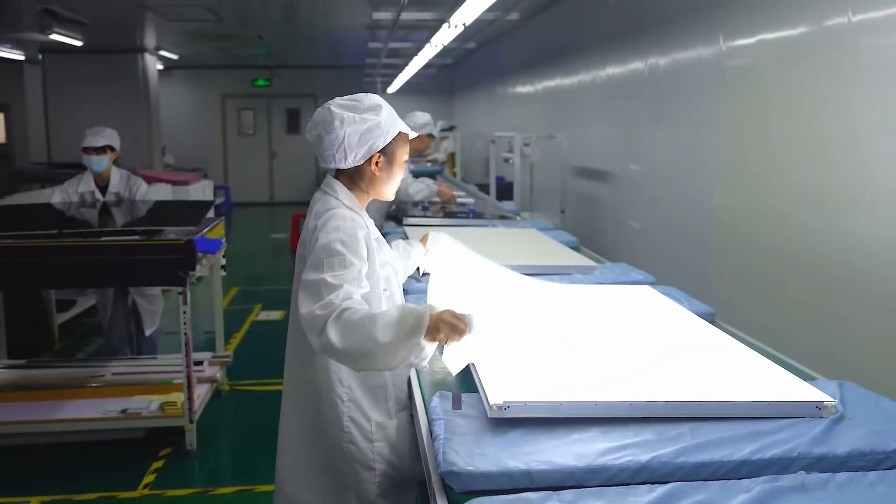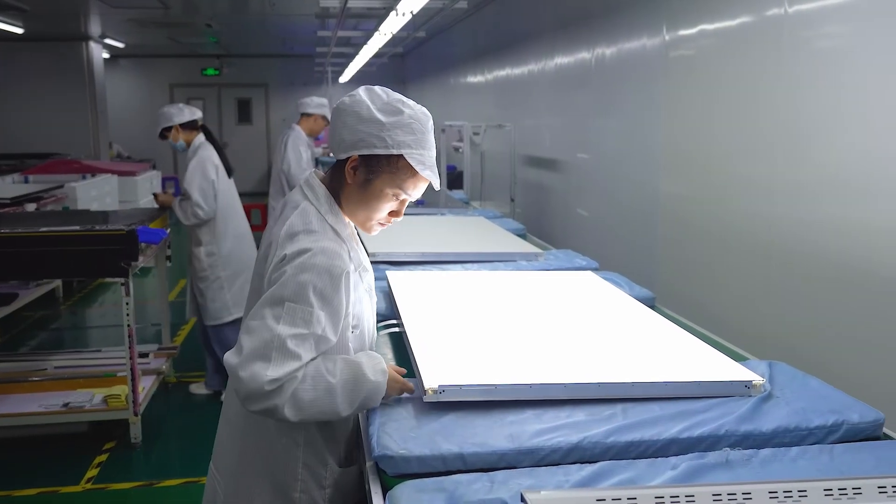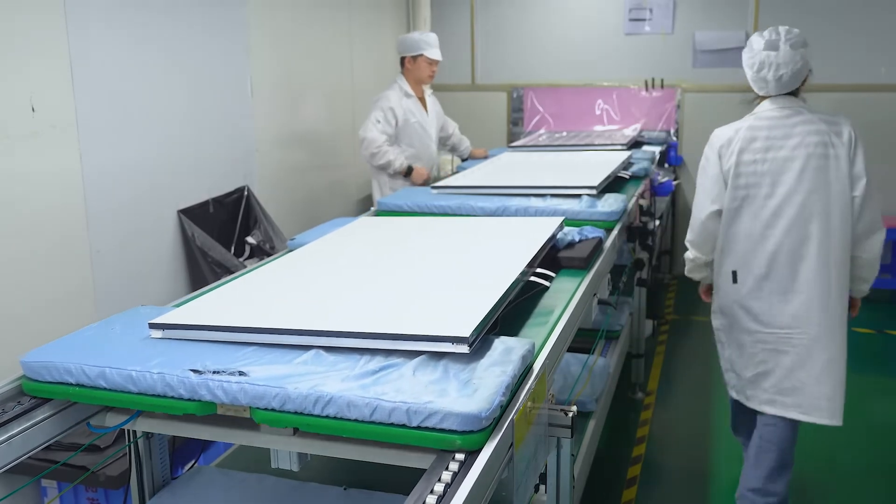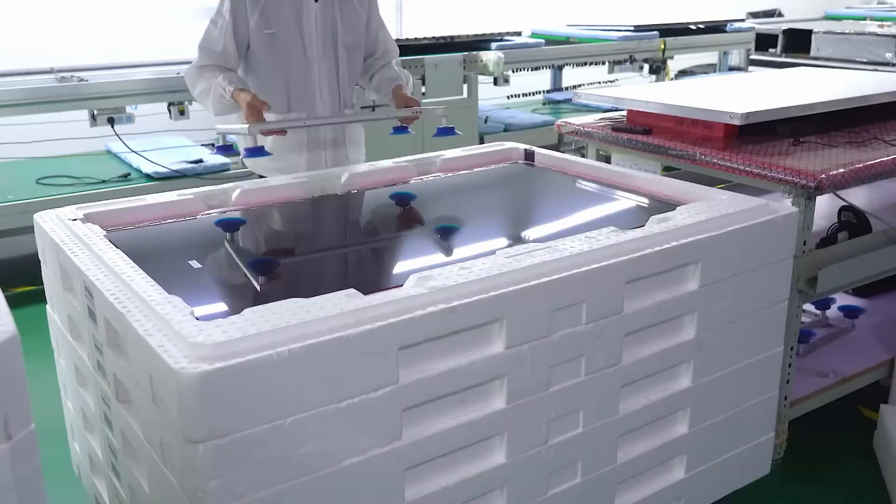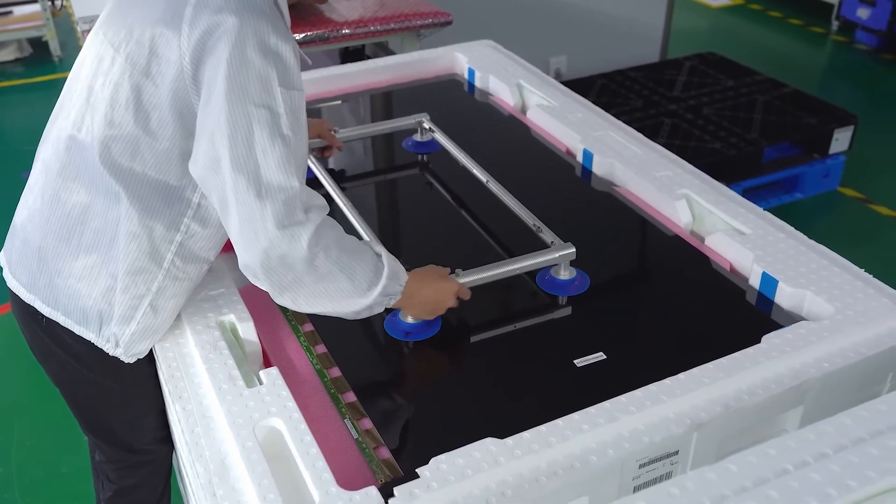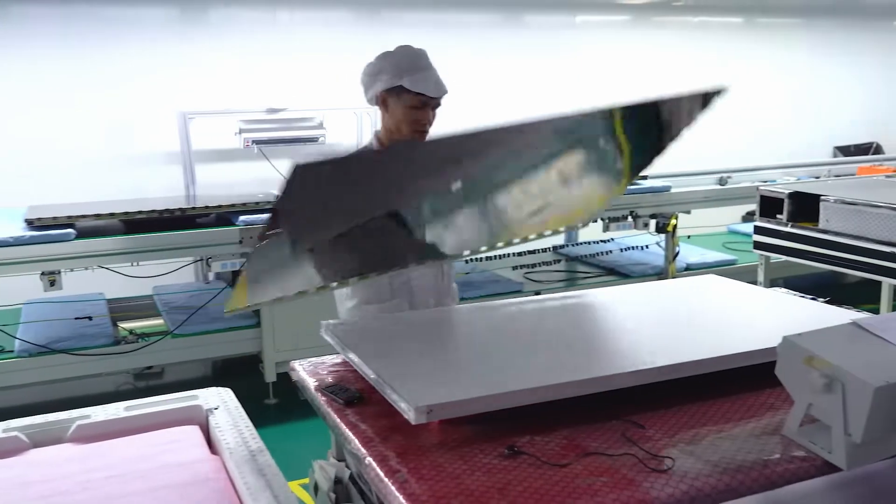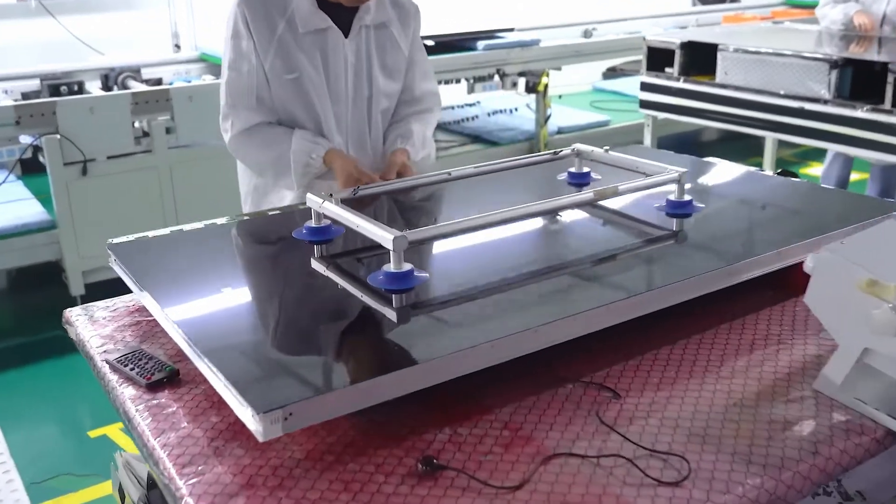The process begins with the creation of the TFT array, which is essential for controlling the individual pixels of the LCD. This involves depositing thin layers of semiconductor material onto a glass substrate, forming a grid of transistors and capacitors. These transistors act as tiny switches that control the flow of electricity to each pixel, determining whether it is on or off.